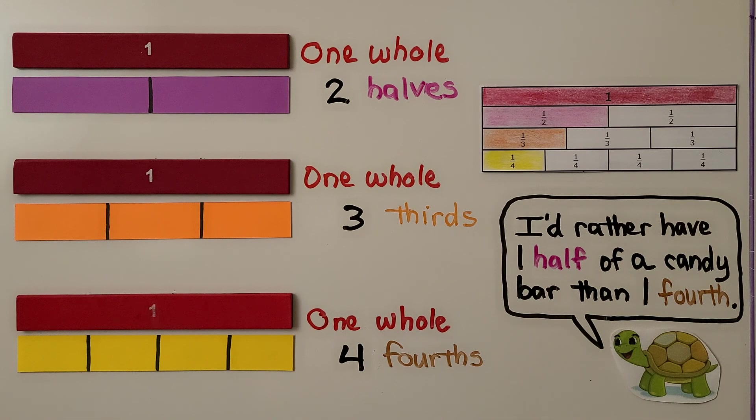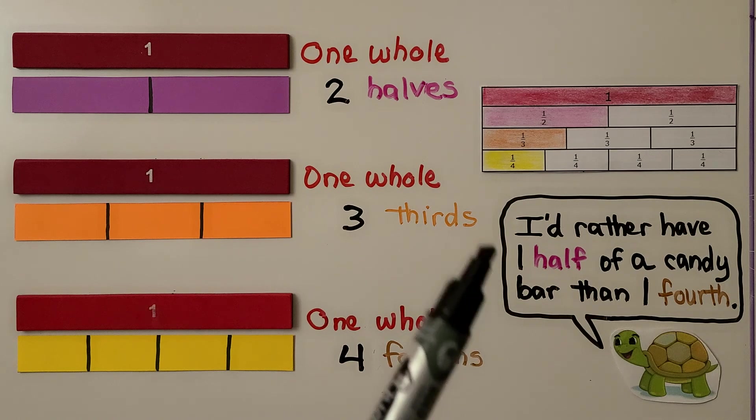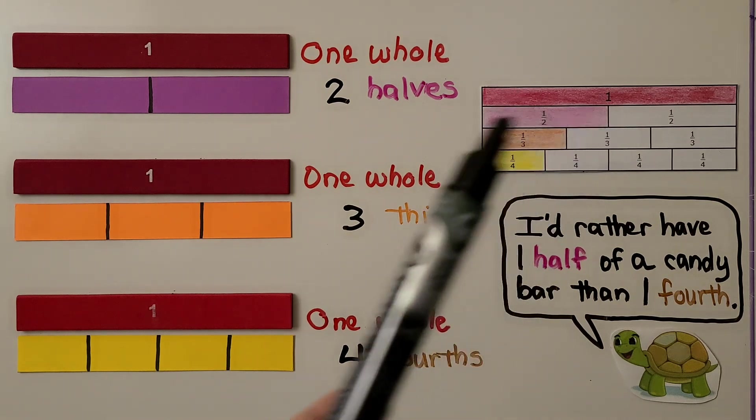So I'd rather have one half of a candy bar than one fourth of a candy bar. One fourth of a candy bar would be this little piece. One half would be this bigger piece.